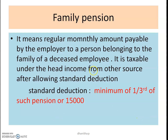Family pension has a standard deduction. The standard deduction in the case of family pension is one-third of such pension or 15,000, whichever is less. That is the amount of family pension that can be deducted by the assessee. So: one-third of pension or 15,000, whichever is less.